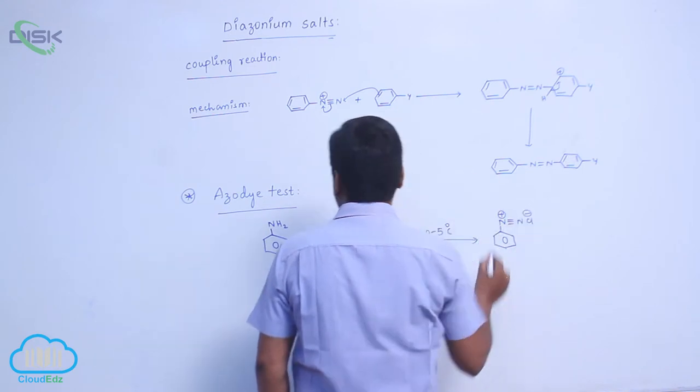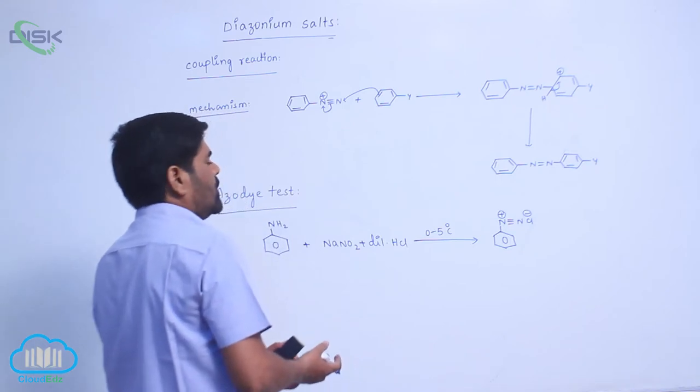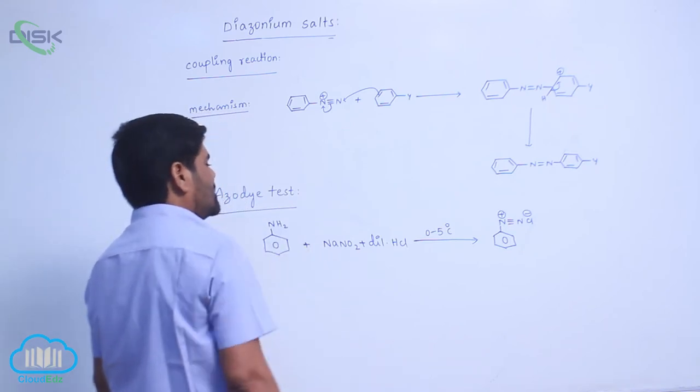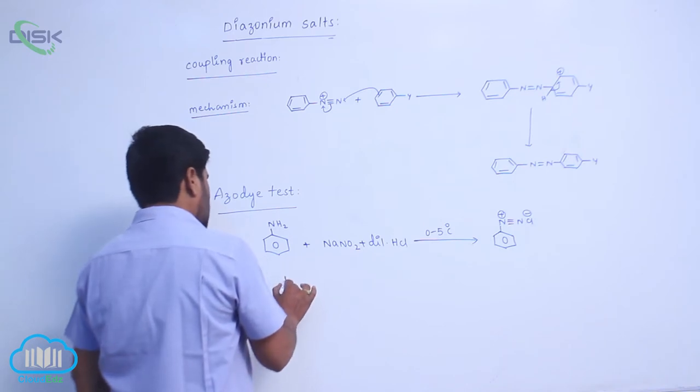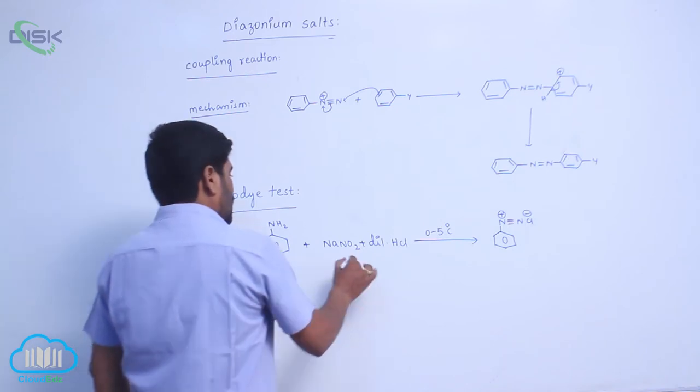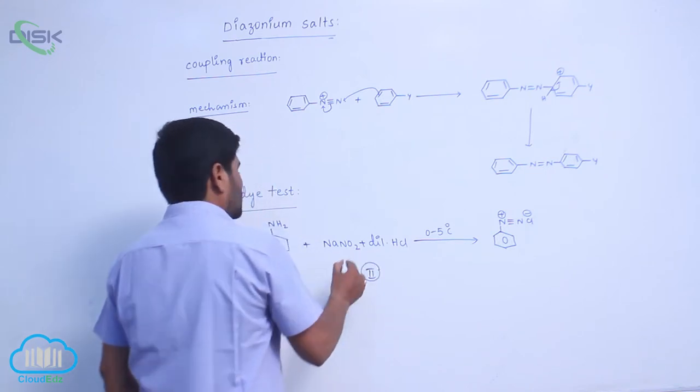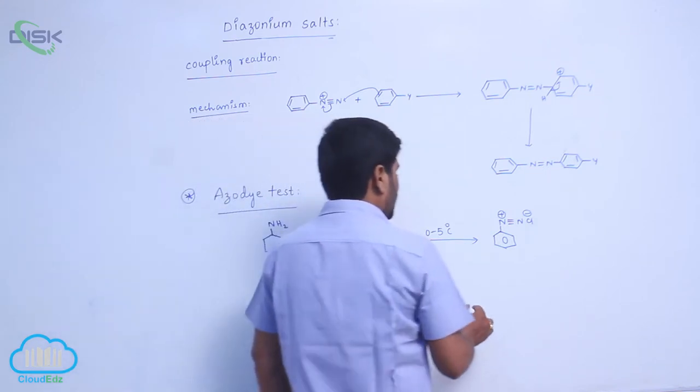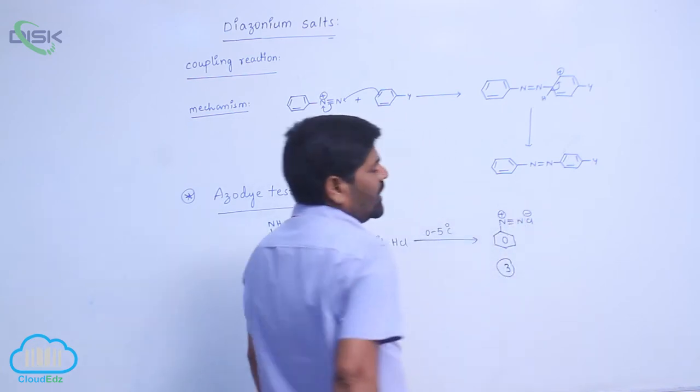First, aniline converts into which one? Benzene diazonium chloride. This benzene diazonium chloride is assumed that it is taken in one test tube. It is also taken in another test tube. By mixing of these two, you get which one? Third compound, that is benzene diazonium chloride.